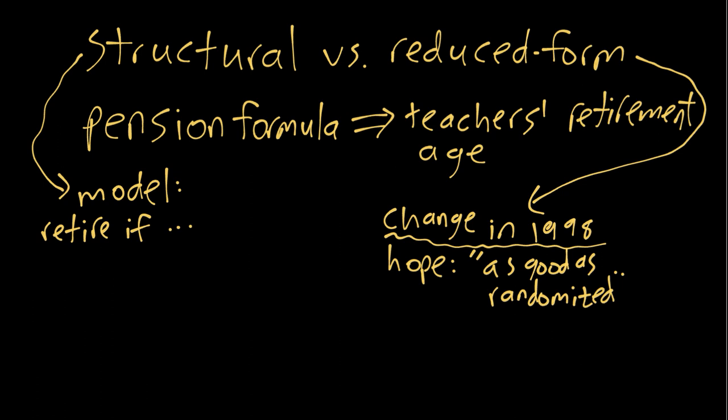So we might be able to estimate the causal effect of that particular change. But then if in the future the policy we're considering is changing the formula to something else that we've never before seen historically, we would need to make assumptions at that point in order to extrapolate from the effects we estimated for the observed historical changes.